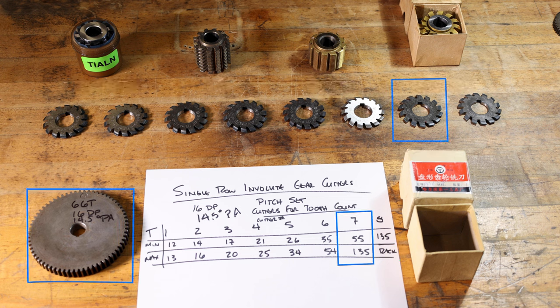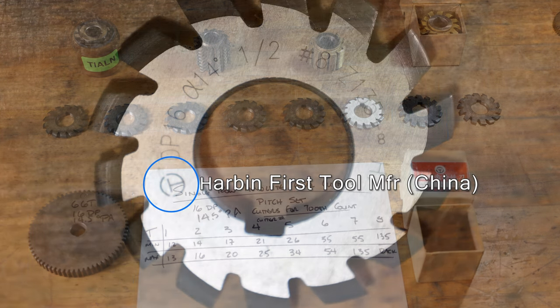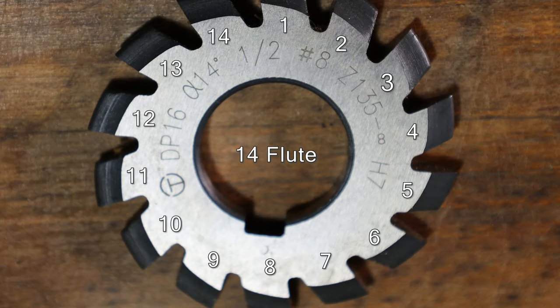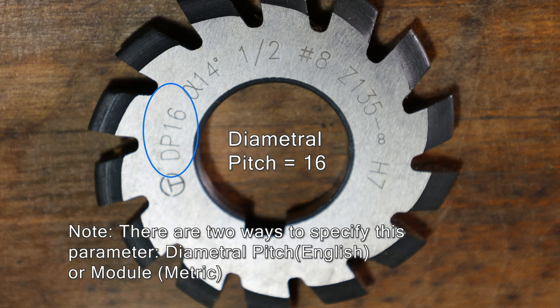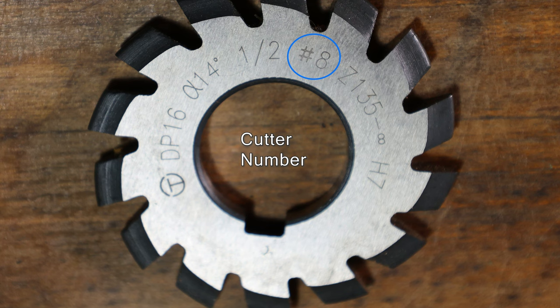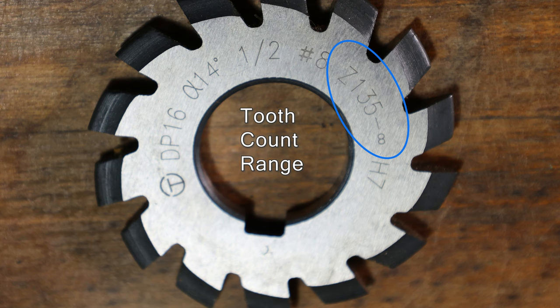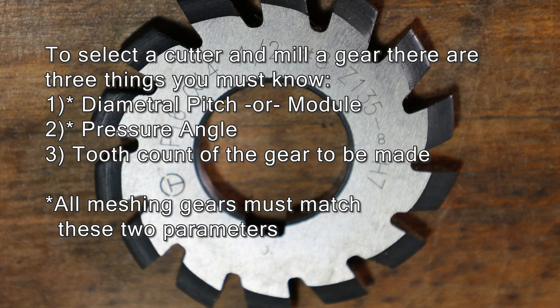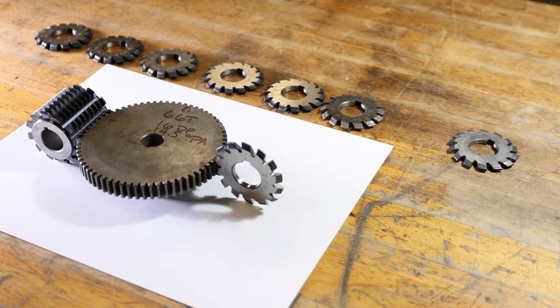For a 66-tooth gear, I would choose cutter number seven because it goes between 55 and 135 teeth. The cutter itself has some things to unpack: there's your diametral pitch — this is DP — and then there's a pressure angle. Cutter number eight goes between 135 and a rack; they use the infinity symbol for an infinite tooth count. To select a cutter you need three things: your diametral pitch or module, your pressure angle, and your tooth count. All meshing gears must match these parameters or they will tear each other up.